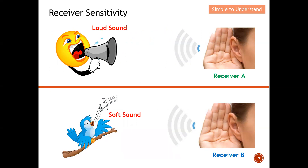Now I want to explain why receiver sensitivity cannot depend on the transmitter. Let's do a simple comparison. I have two receivers — Receiver A and Receiver B — and I task you to determine which is better. Under this test, Receiver A has a transmitter that transmits a very loud sound, so technically Receiver A will be able to hear it loud and clear. Receiver B has a transmitter that emits a very soft sound, and because of that, Receiver B can hardly hear the transmitter.